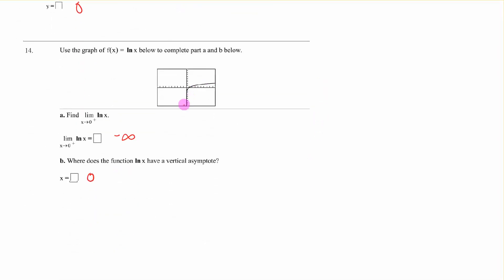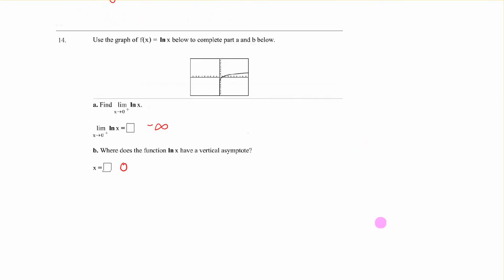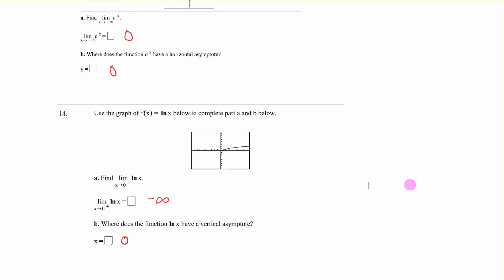This is ln of x. As x approaches 0 from the right, where is the function going? Negative infinity. Where does it have a vertical asymptote? That is the boundary. It's going this way. Vertical boundary is x equals 0. I think that is the last problem on there. So that should get you going on 11.1.